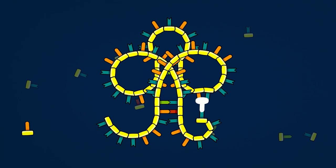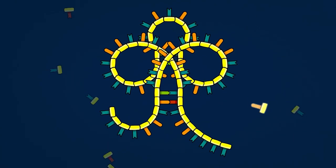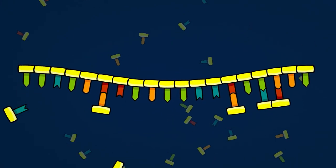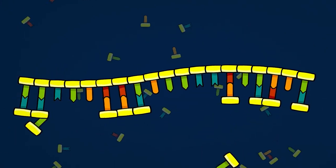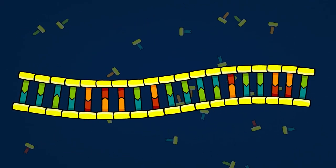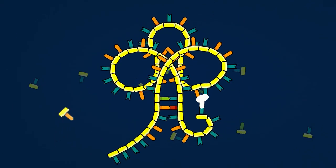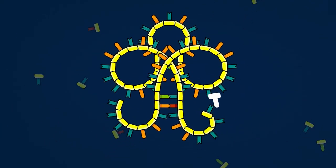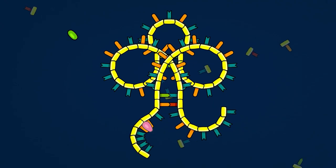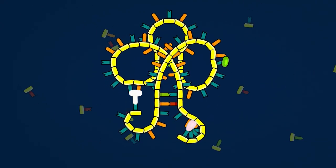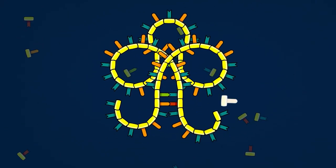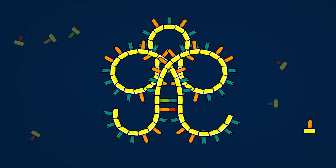RNA is really cool because it acts as an enzyme and as a template for its own replication. This means that not only could it act as a gene early on, but it could also be a functional molecule that participates in chemical reactions in the environment, helping it survive and replicate.